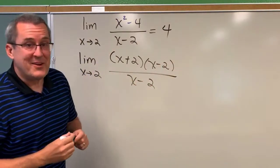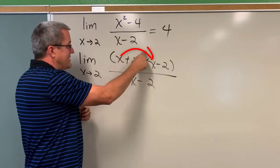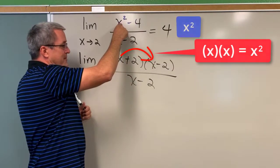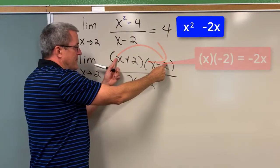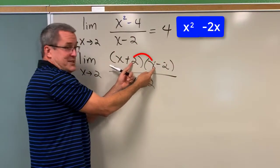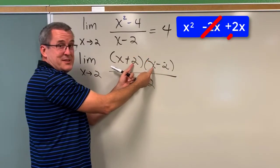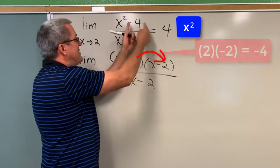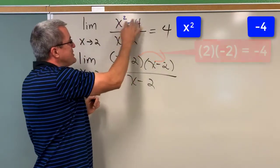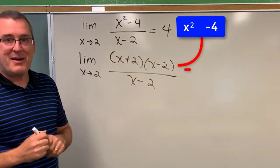Just as a quick reminder, if we were to multiply this out, distribute, we would get x times x, which is the x squared. We would get x times a minus 2 or minus 2x. We would get 2 times x or plus 2x. So the minus 2x and the plus 2x would make 0. And then we would multiply the positive 2 and the minus 2 to get the minus 4. So x squared minus 4 is equivalent to x plus 2 times x minus 2.